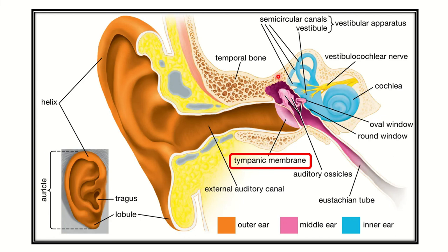Then there is the middle layer, and the inner ear lies in the more medial parts. Here we can see the inner ear — this is the cochlea and the vestibulocochlear nerve — and we can see a tube, the Eustachian tube, which connects the middle layer to the nasopharynx.